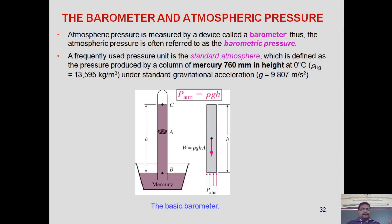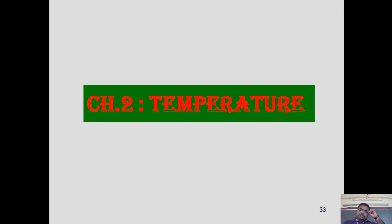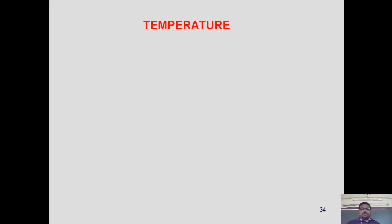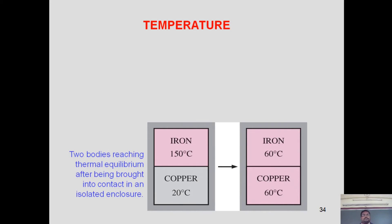Now we come to the second chapter: temperature. When two bodies of different temperatures are kept together, after some time they will attain a common temperature. This happens because heat gets transferred from the high-temperature body to the low-temperature body. After a period of time, both bodies attain the same temperature — we then say the bodies are in a state of thermal equilibrium. Thermal equilibrium means there is no unbalanced temperature gradient between the system and its surroundings.